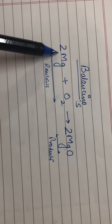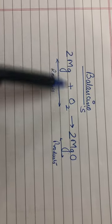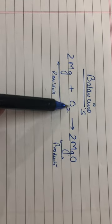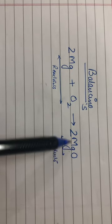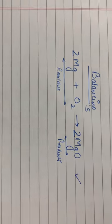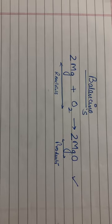Finally checking, there are 2 atoms of magnesium on the reactant side and 2 on the product side. 2 atoms of oxygen on the reactant side and 2 on the product side. Now this equation stands to be a balanced chemical equation.